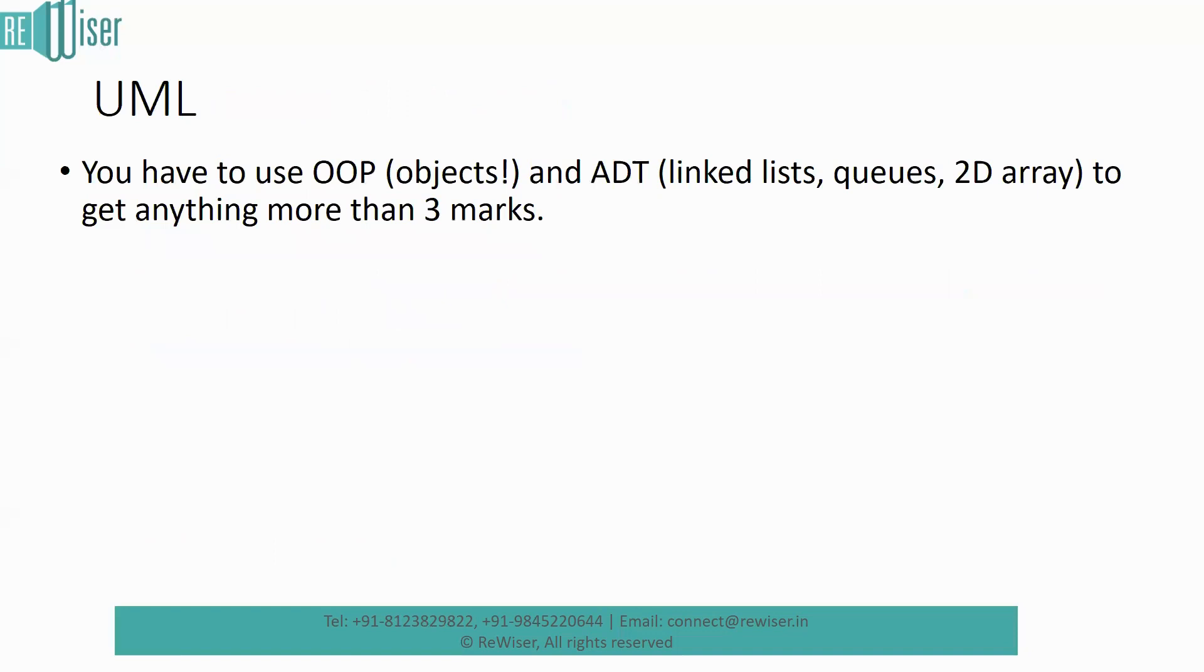Now coming to the first part, the UML diagrams. You have to use object-oriented programming (objects) and complex data structures like linked lists, queues, or 2D arrays. If you really want to go beyond three marks in this criterion, you should probably use these kinds of features in it.